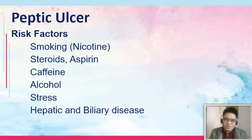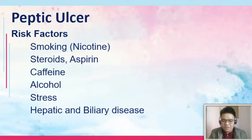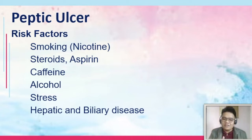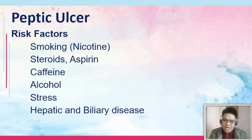Next, steroids. The role of steroids and NSAIDs in peptic ulcer disease seems to be trivial. Research has shown that steroids cannot cause peptic ulcer alone; however, if steroids are given with NSAIDs such as aspirin, it can potentiate peptic ulcer disease. Caffeine increases acid production. Alcohol, other than increasing acid production, also decreases the production of the protective barrier. Stress also increases acid production and is a very good risk factor for stress ulcer.